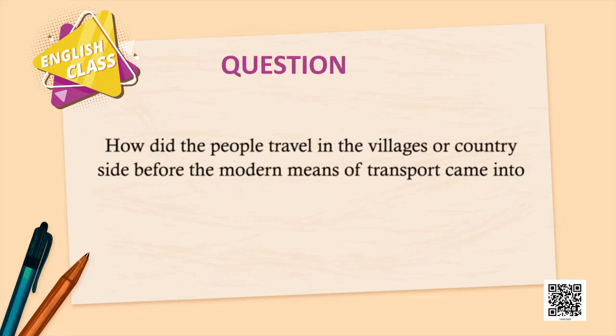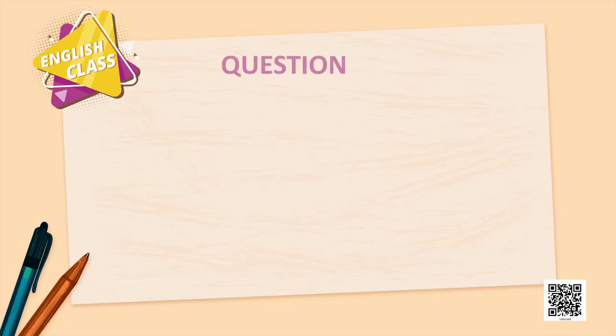Do you know how people travelled before modern means of transport? Earlier people used to travel by bullock cart, tonga, bicycle, etc. How did news travel in such areas? Through people, from one person to another. Yes, news used to travel through people, especially shopkeepers in the countryside, although radios were already there in the beginning but were used only to broadcast news of national importance.